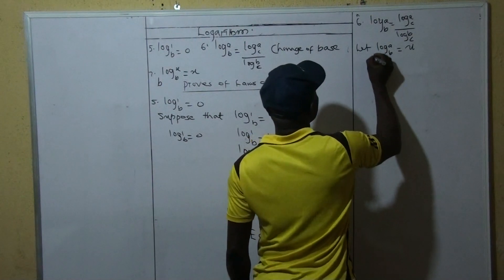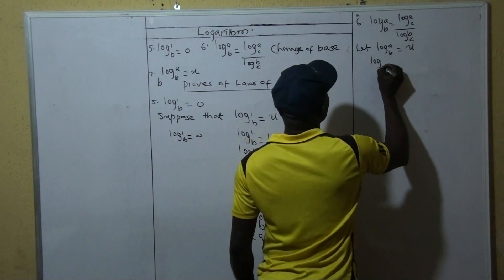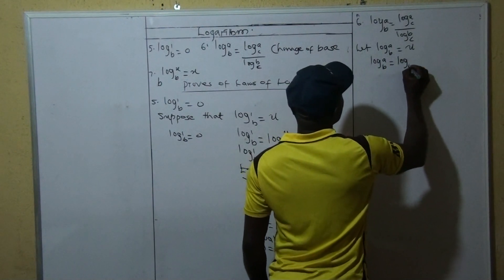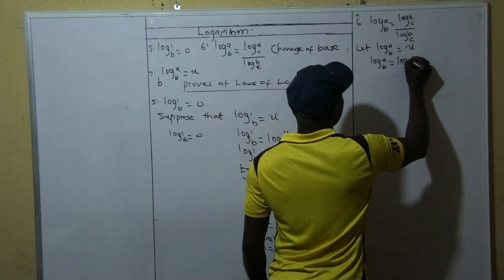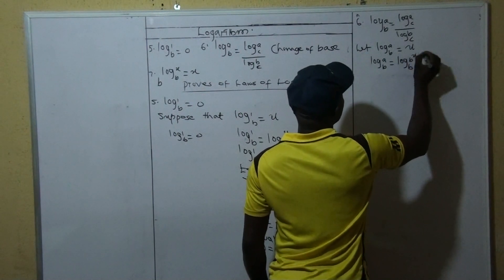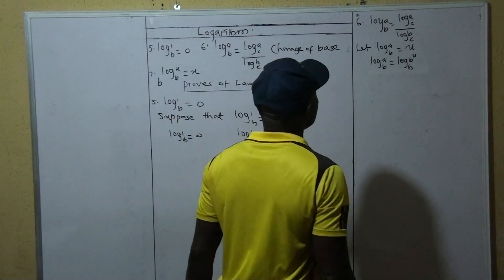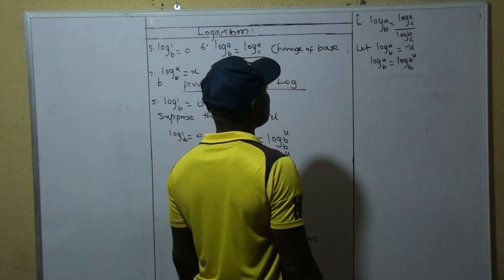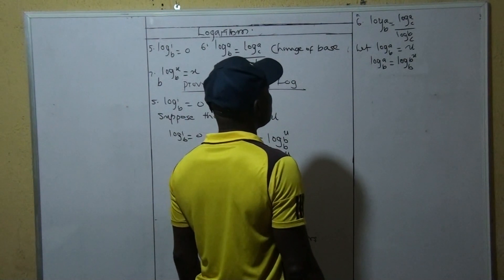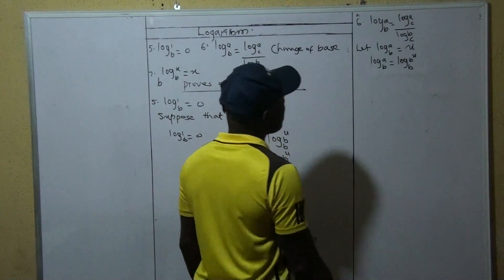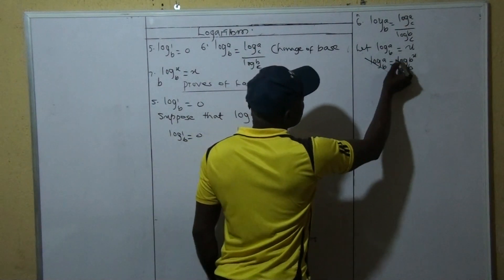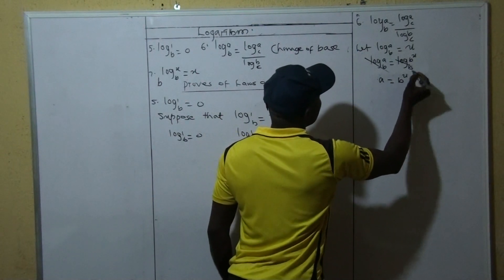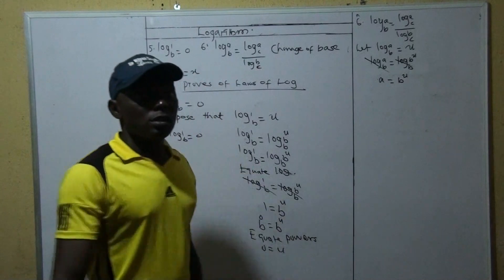So here we can say we can quickly say that log A to base B is equal to log, because of the fact that this one is B raised to U. So here we can say this, we equate with this, and we'll have that A is equal to what, B raised to power U.